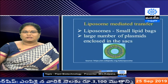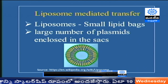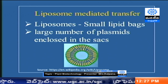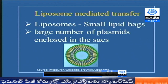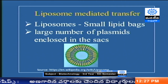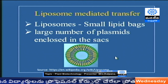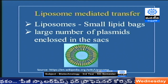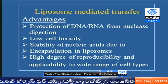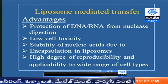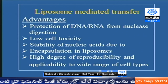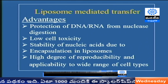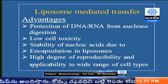The other method is liposome-mediated transfer. Liposomes are small lipid bags made up of a lipid bilayer. We can insert a large number of plasmids into these sacs. We prepare a recombinant plasmid where the gene of interest is incorporated, purify the plasmids, and incorporate them into the liposome. Liposome-mediated gene transfer has more advantages than disadvantages: the DNA or RNA is well protected from nuclease digestion, it shows very low cell toxicity, the stability of nucleic acids is high due to encapsulation, and there is a high degree of reproducibility and applicability to a wide range of cell types.